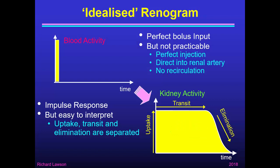But it's a rather idealised renogram because it requires a perfect bolus input — a blood activity which rises instantly and then falls immediately to zero. That's not practical: we'd need to give a perfect injection directly into the renal artery, which is unnecessarily technically difficult. But even that isn't good enough because after a perfect bolus, some activity isn't removed by the kidney, passes through the renal vein, and can recirculate a second, third, or fourth time. This recirculation means the blood activity is never a perfect bolus no matter how we inject.